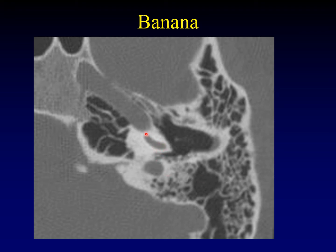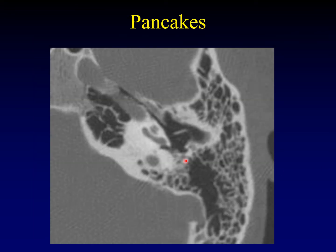If you find yourself looking at a banana — frankly it looks more like a gherkin to me, but it's supposed to look like a banana — that's the basal turn of the cochlea. If we go up a cut, we'll find ourselves looking at a stack of pancakes, sometimes called a stack of coins. That stack of pancakes is the portion of the basal turn of the cochlea with the upper turns coming in. On this image, you can see the round window; coming around into the round window niche, there's the round window as seen on the axial plane.